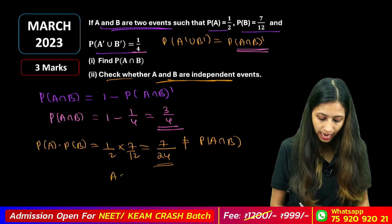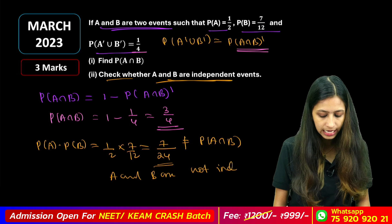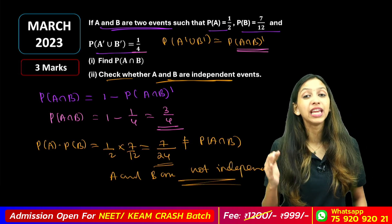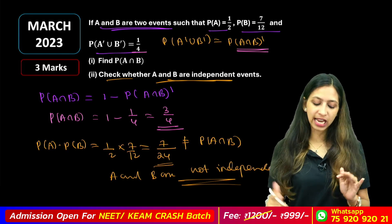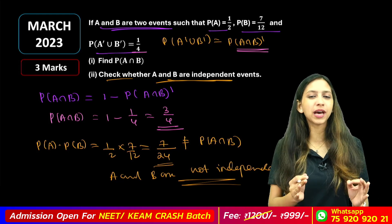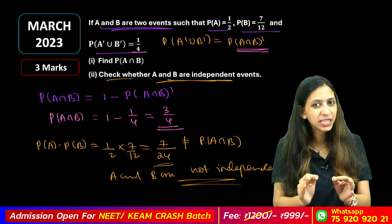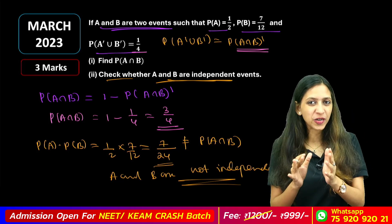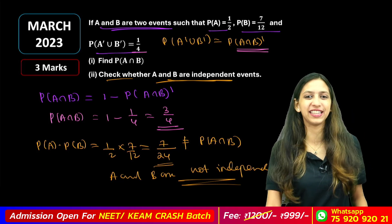So we call it: A and B are not independent because P of A intersection B does not equal P of A times P of B. We have to verify P of A into P of B. If it is independent, P of A intersection B must equal P of A times P of B. Thank you very much.